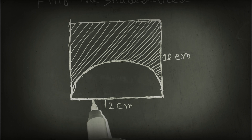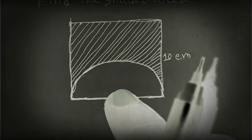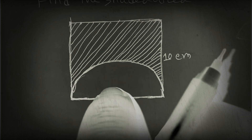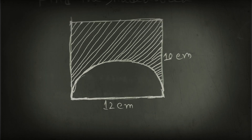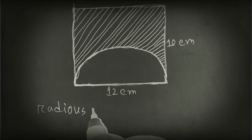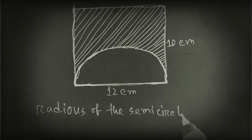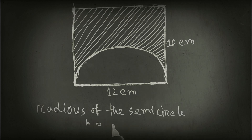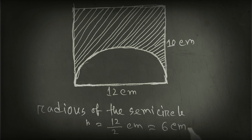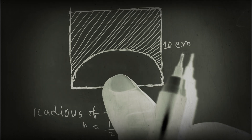To find the area of this figure, we have to find the radius of the semicircle. The radius r equals 12 divided by 2, which equals 6 cm.